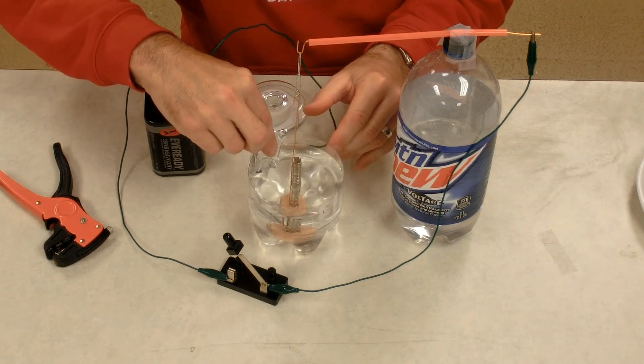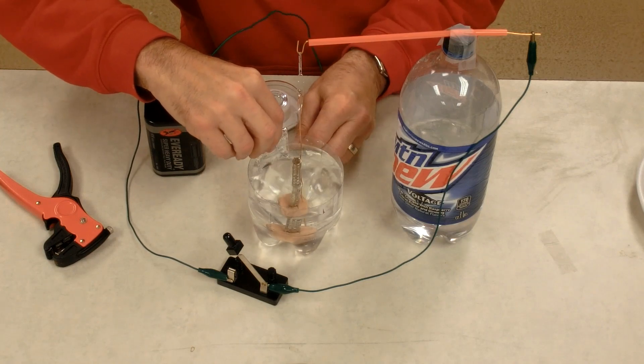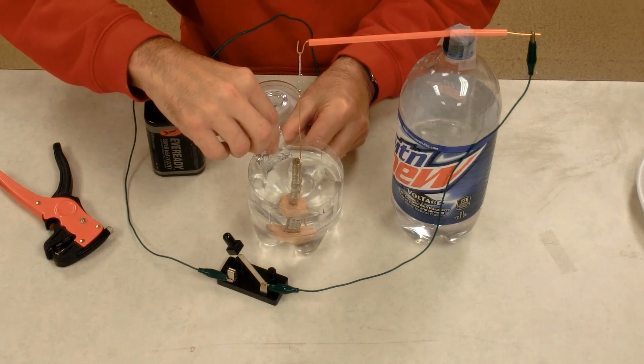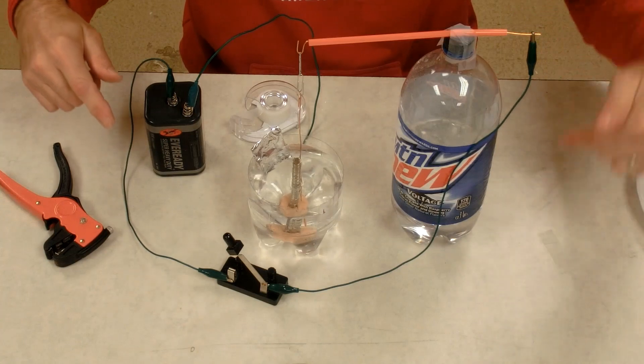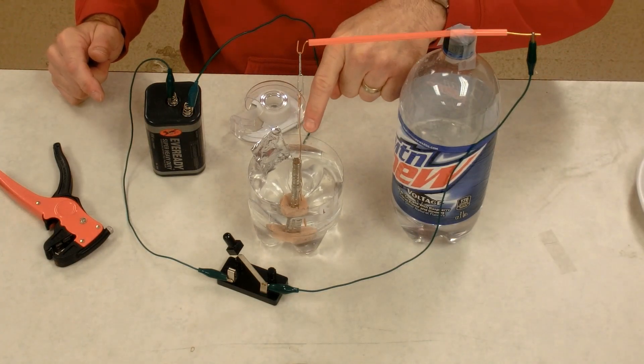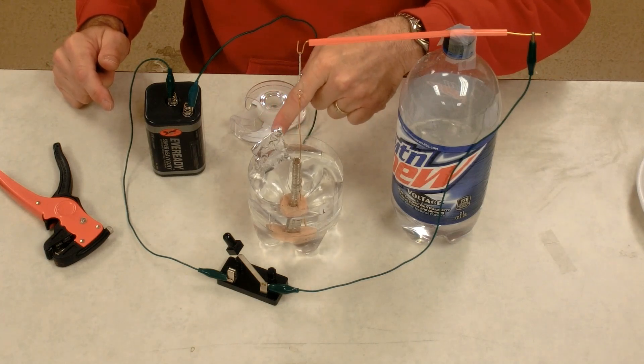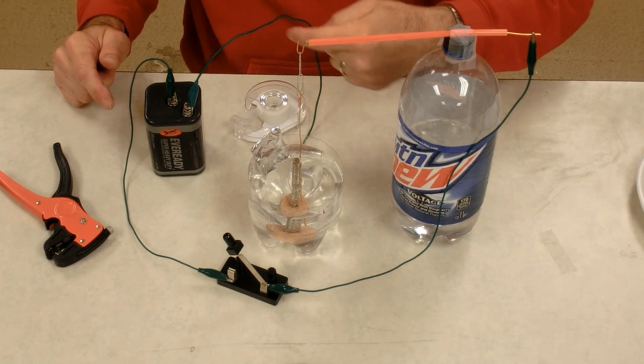My complete circuit will be battery to switch to wire through the paper clips, through the dangling wire, into the salt water, into the aluminum foil, out of the tub, back to the battery.